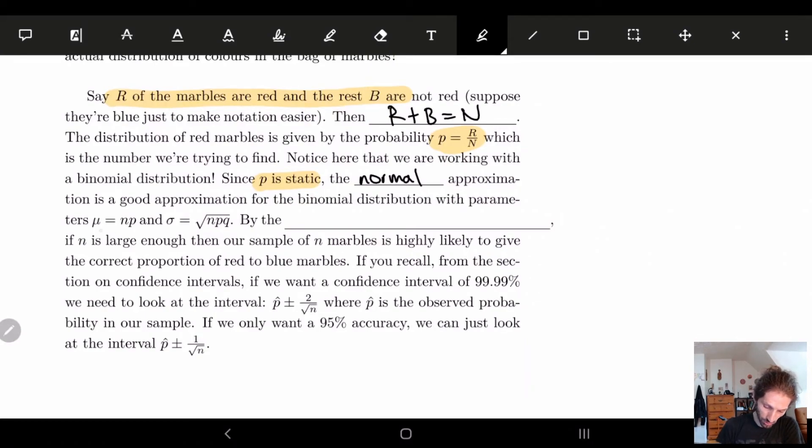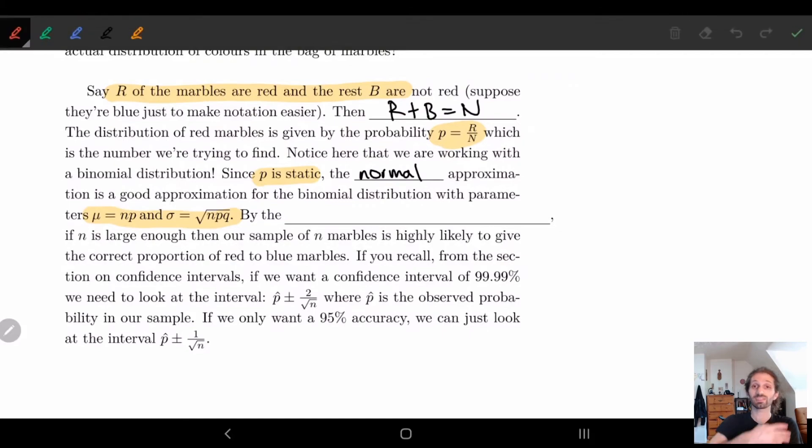And so here we have mu and our standard deviation, and we're going to use, since we're increasing our N, we want to increase our N, what we can use is the law of large numbers. So we're starting to use all the things that we've been learning in the past few lectures, law of large numbers.